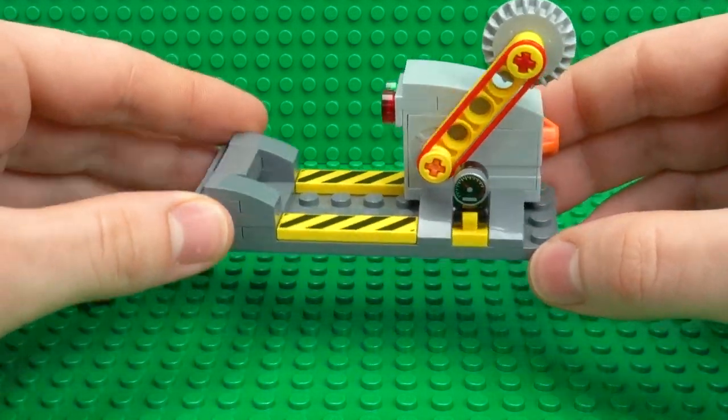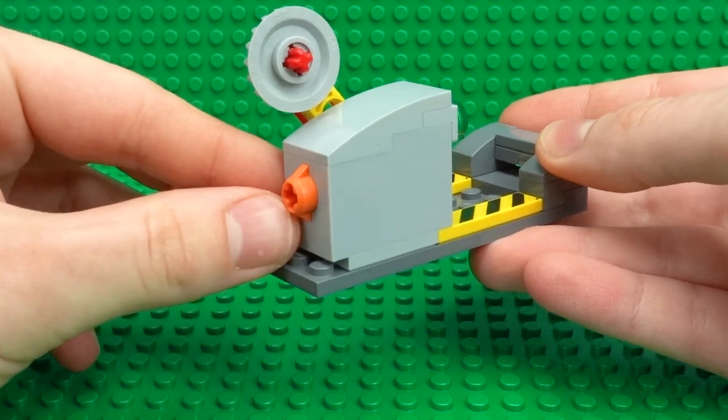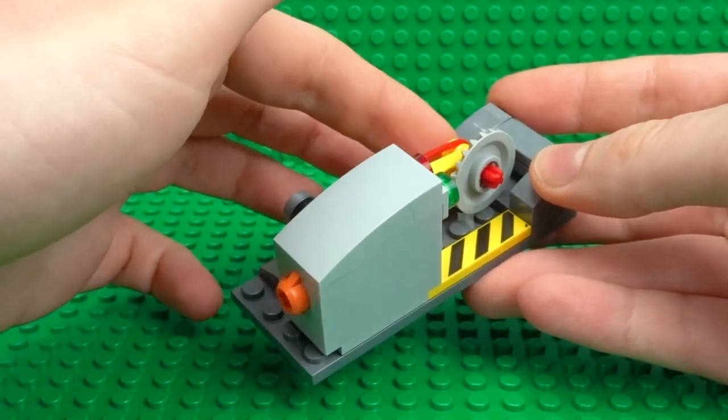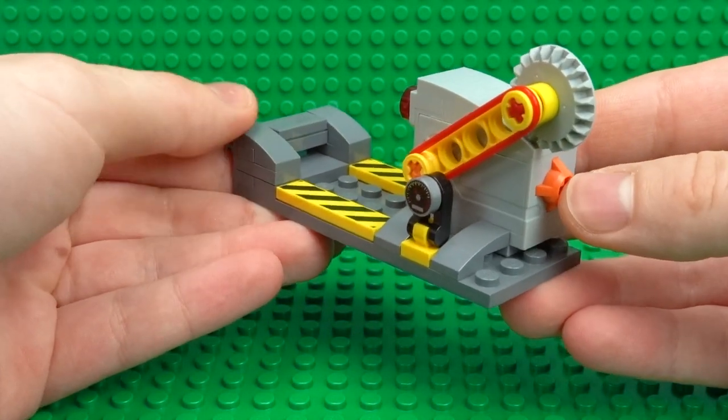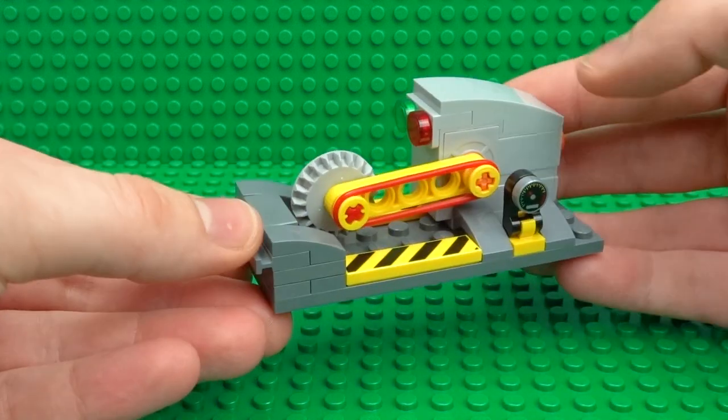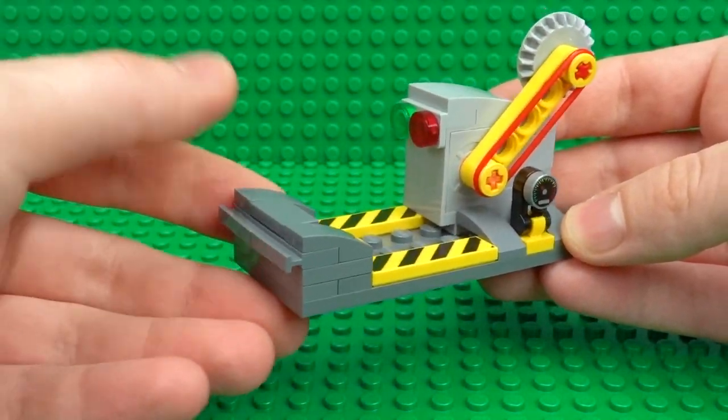You'll see when we press that, that's what activates this saw arm and brings the arm downwards. But in case you don't have that piece, I have made an alternative build that is made out of more simple pieces.